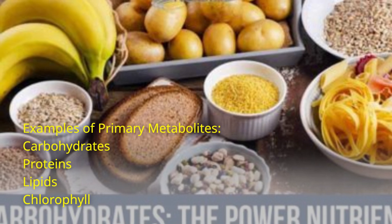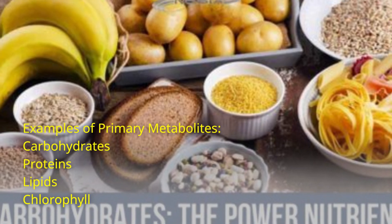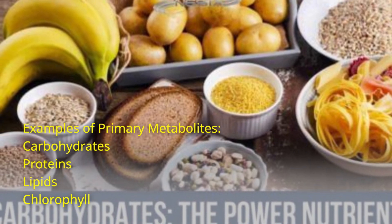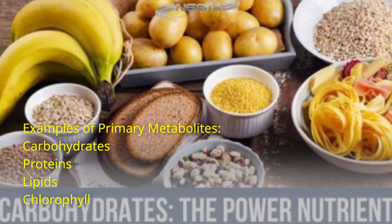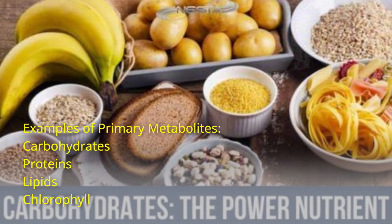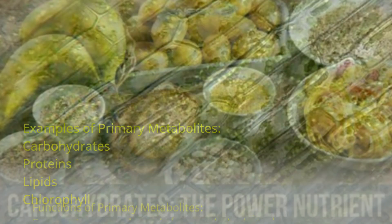Examples of primary metabolites include carbohydrates, proteins, lipids, and chlorophyll.